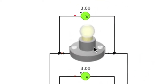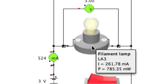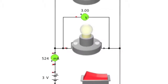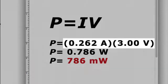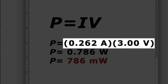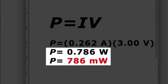Looking carefully again at a single bulb, we can see the power used by each is 785 milliwatts. We can confirm that value with the formula P = IV. Due to there being two loops with identical bulbs in this circuit, exactly half of the total current will flow through each bulb. So multiplying the current of 0.262 amps by the 3 volt drop across each bulb, we confirm that the power used by a bulb in this circuit is indeed very close to 785 milliwatts.